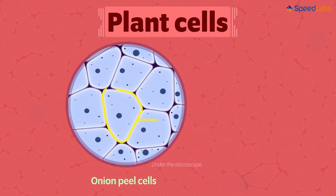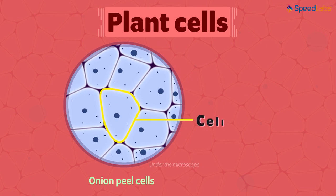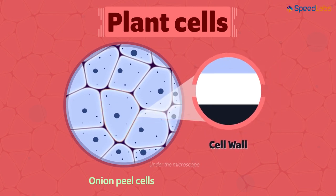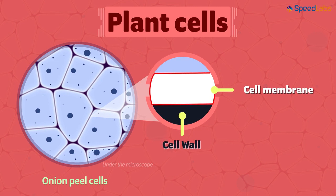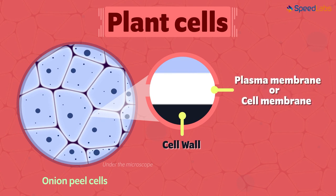This outer margin seen here is called the cell wall. If we zoom in a bit, we notice that there is another layer on the inner side of this cell wall. This is called the cell membrane. The outer wall is the cell wall and the inner layer is called the cell membrane, also referred to as the plasma membrane.